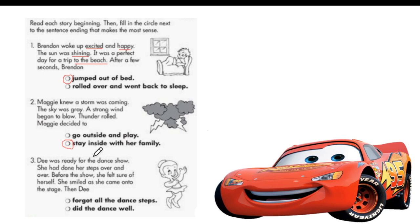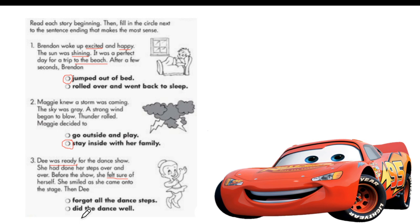Dee was ready for the dance show. She had done her steps over and over. Before the show, she felt sure of herself. She smiled as she came onto the stage. Then did Dee forget all the dance steps or did the dance well? Dee was ready — the story says she practiced over and over and felt sure of herself. When you practice a lot every day, you will become good at it and you will not forget it. So she did well in the dance. That is the correct conclusion.